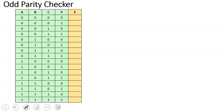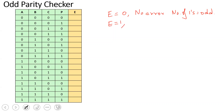The odd parity concept is: the number of ones in the received data stream is even, which means the error output is equal to 1. We will receive all the errors. If the number of ones in the received 4-bit data is even, it means there is an error. This is the concept, so we can fill this in the truth table.